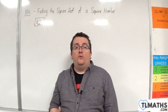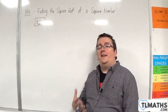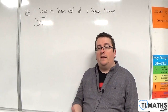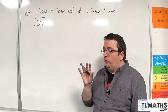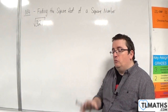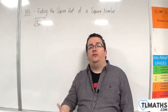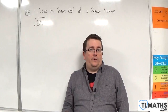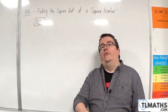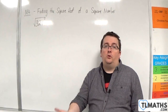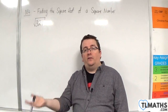In this video I want to go through an example of showing you how we can square root a square number. Recall that a square number is the result of multiplying a positive integer by itself. So 1 squared is 1, 2 squared is 4, 3 squared is 9, 4 squared is 16.